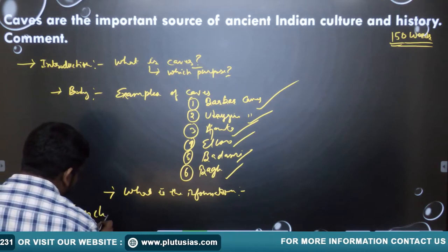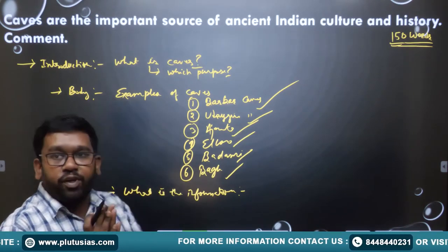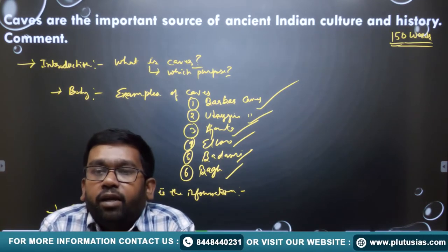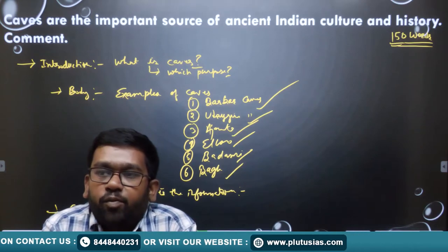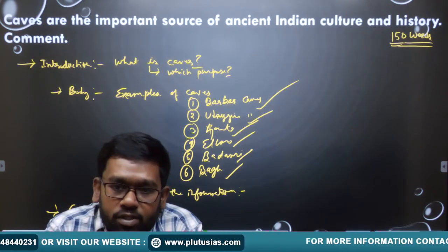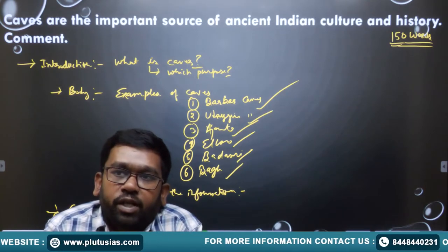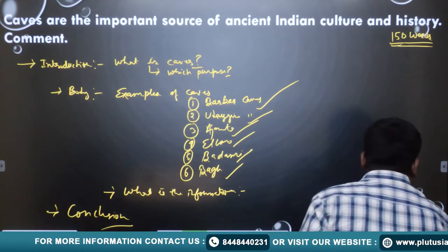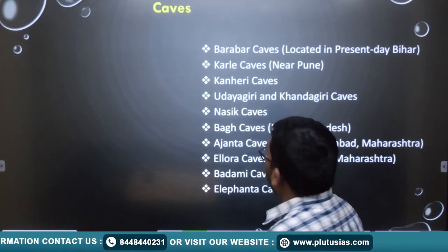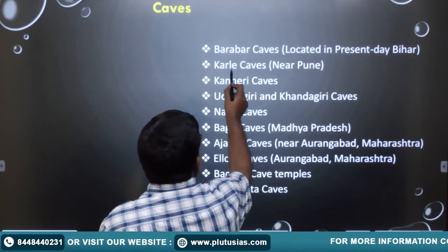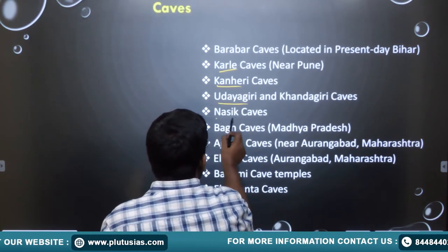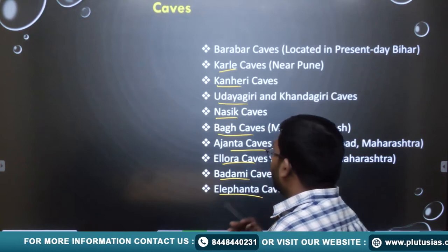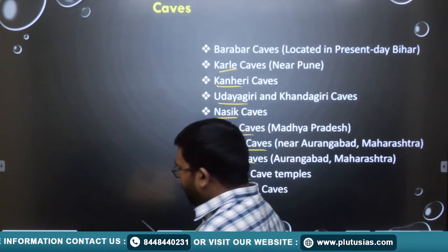In this video we will discuss some important caves made in the ancient period, why these caves are famous, and their important specifications. The major caves to discuss are: Barabar caves, Karla caves, Kanheri caves, Udayagiri caves, Nasik caves, Bagh caves, Ajanta caves, Ellora caves, Badami cave temples, and Elephanta caves.